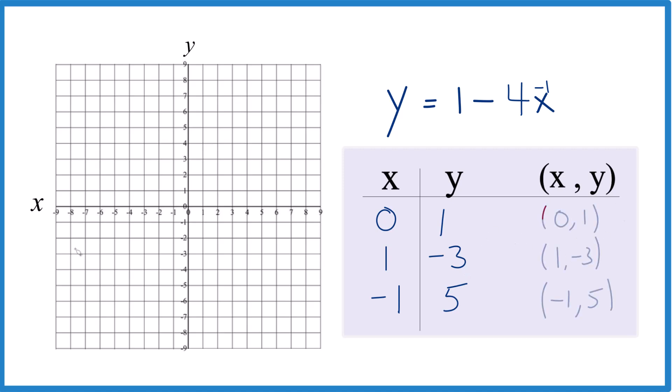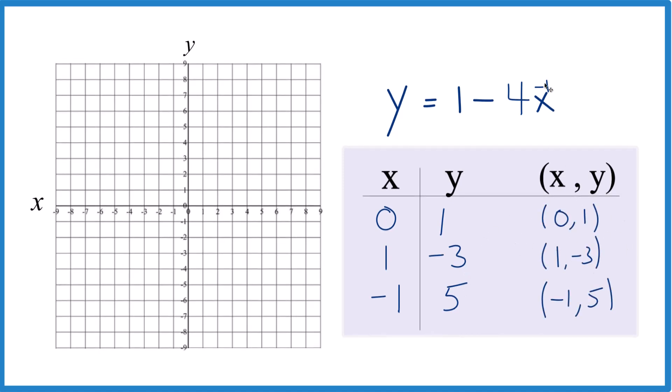So these are the points that we're going to graph for this equation here, y equals 1 minus 4x. So we start off with x is 0, y is 1, right there.